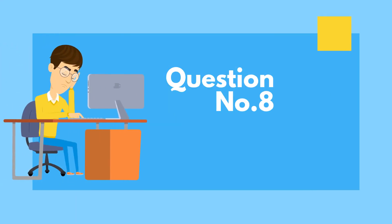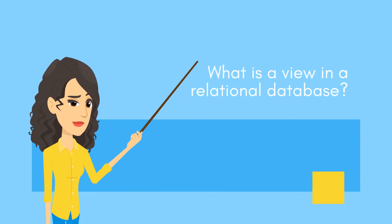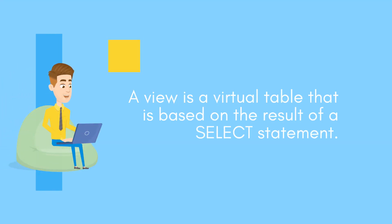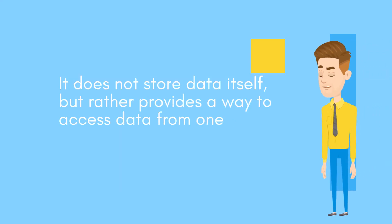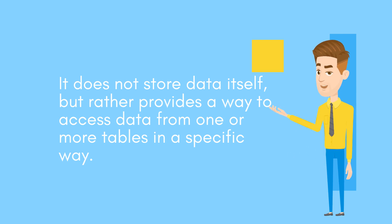Question number eight: What is a view in a relational database? A view is a virtual table that is based on the result of a select statement. It does not store data itself, but rather provides a way to access data from one or more tables in a specific way.